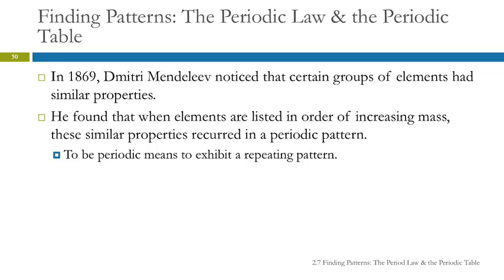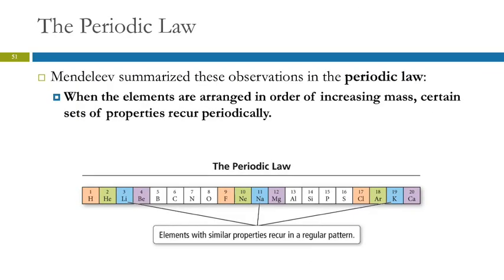So he found that if you put the elements in order of increasing mass, those properties recurred in a periodic pattern. Periodic means to exhibit a repeating pattern. So he summarized these observations in what's called the periodic law. When the elements are arranged in order of increasing mass, certain sets of properties recur periodically.